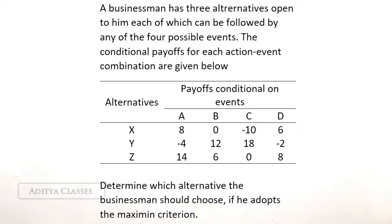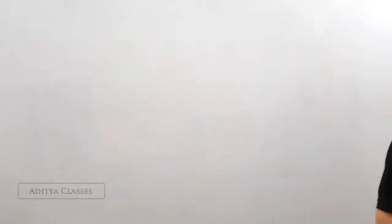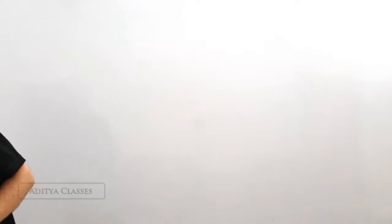This is a pretty straightforward question. The alternatives are given, payoffs are given. All we need to do is select the minimum from each of the payoffs and then select the maximum from those payoffs. That is it.